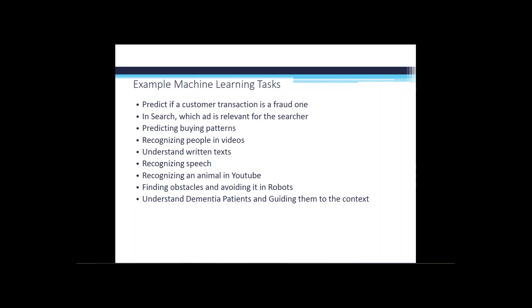In search, determining which ad is relevant for a query is a classic ML problem. Recommendation systems, predicting buying patterns, recognizing people in videos — these are classic examples. Understanding written texts is another application; for example, if you want to digitize large historical conference proceedings which have been on paper.